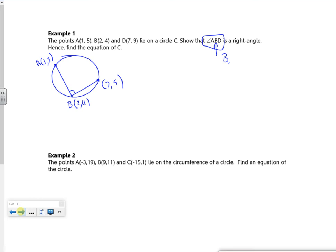So the gradient from A to B, so the change in y. So remember I do right point take left point. So 4 take 5, 2 take 1 is going to give me minus 1. The gradient from B to C, so right take left, so 9 take 4, 7 take 2 is 1. The gradient from A to B times by the gradient from B to C will be minus 1 times 1, so that's equal to minus 1. So therefore, they must be perpendicular.